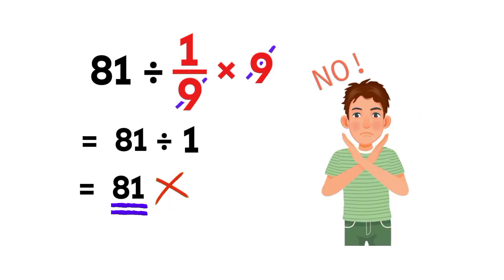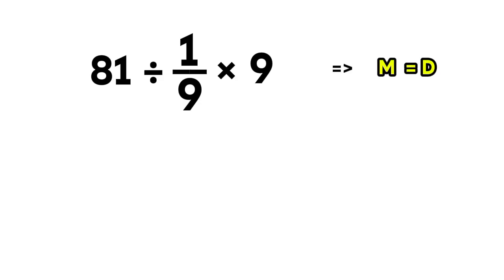But hold on, this answer is not correct. Multiplication and division have the same priority, and we must work left to right. So first, we do this division, then the multiplication. If we multiply first, the answer is wrong.